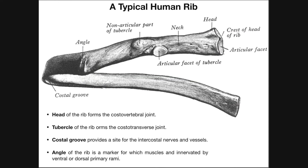Typical human rib — humans have 24 ribs, because we have 12 pairs of ribs. We have 12 thoracic vertebrae, T1 through T12, and generally speaking, each one is going to have its own rib. 12 pairs of ribs: 12 on the left, 12 on the right.